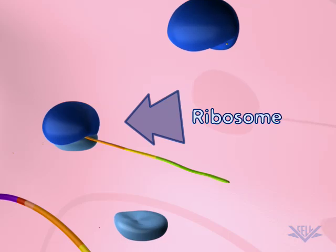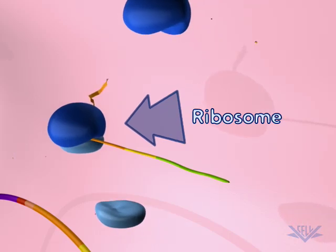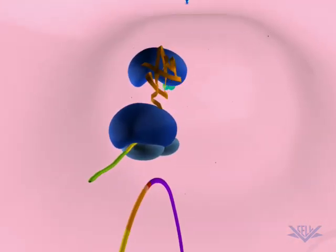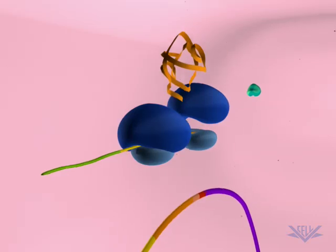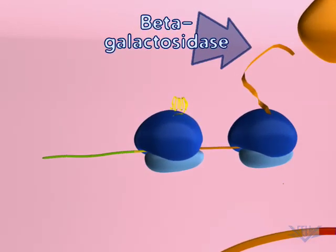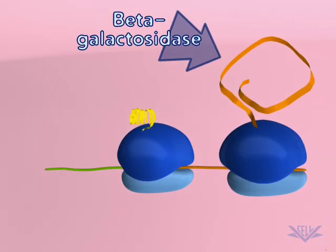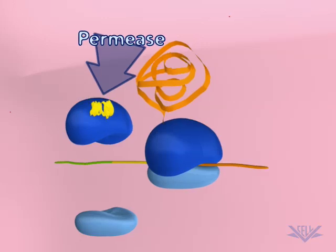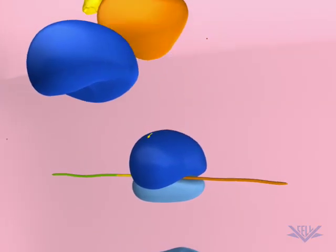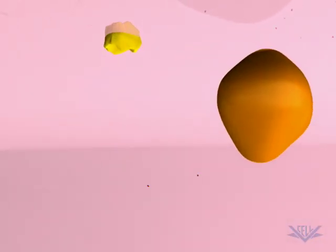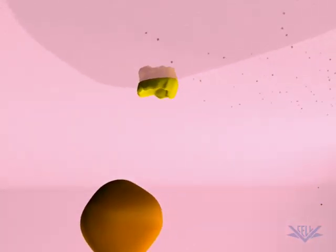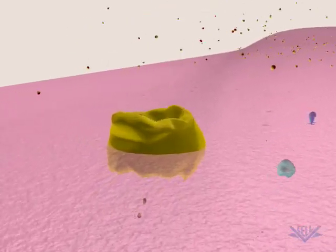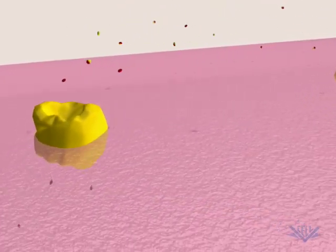Ribosomes then bind to the mRNA and the two proteins are translated. The first protein is beta-galactosidase, which breaks down lactose into two simple sugars. The second protein is permease, a membrane-bound protein. When embedded in the cell membrane, permease functions to provide a direct route for the lactose outside the cell to be imported into the cell.